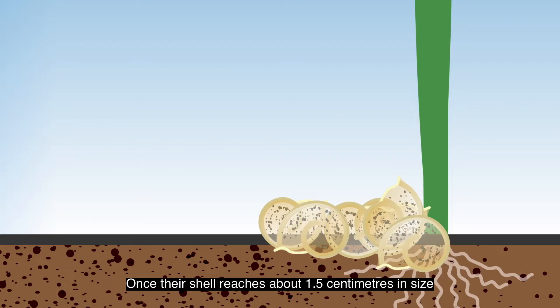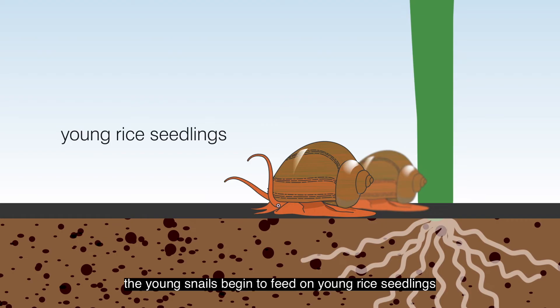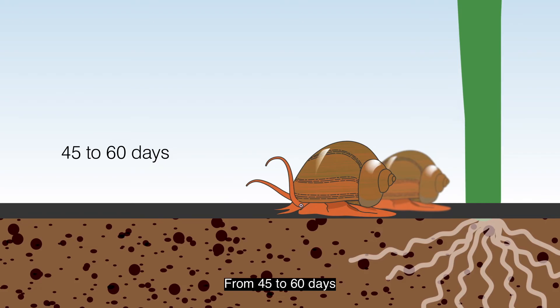After 15 to 25 days, the hatchlings develop into juveniles. Once their shell reaches 1.5 centimeters in size, the young snails begin to feed on young rice seedlings and other aquatic plants.